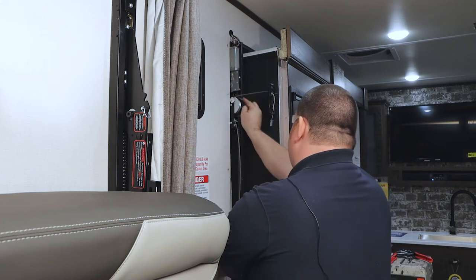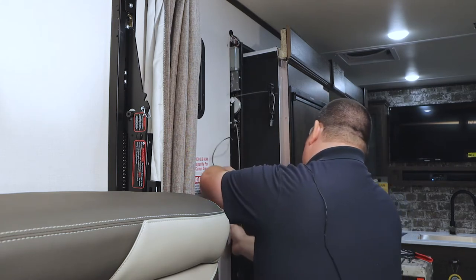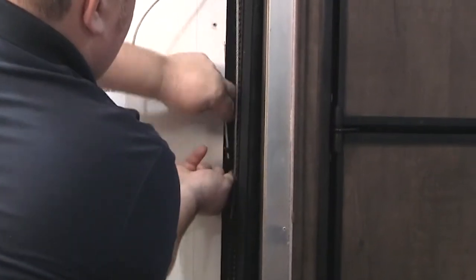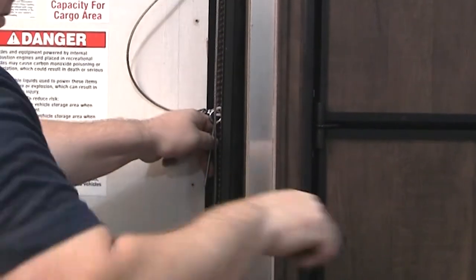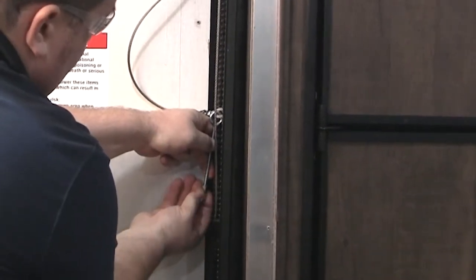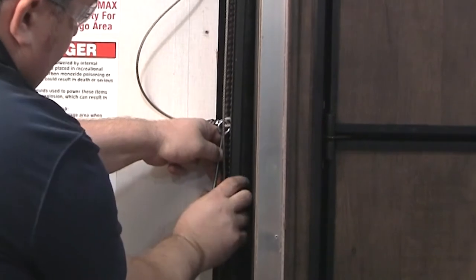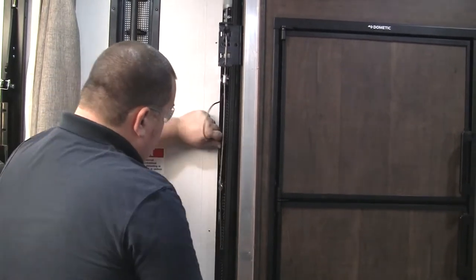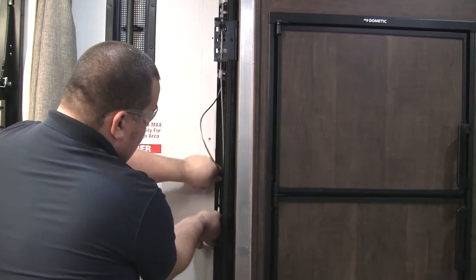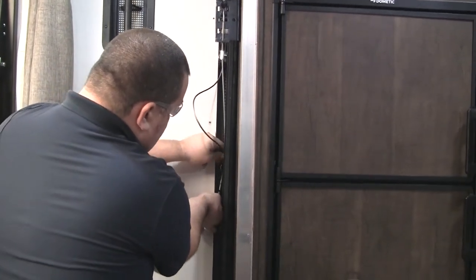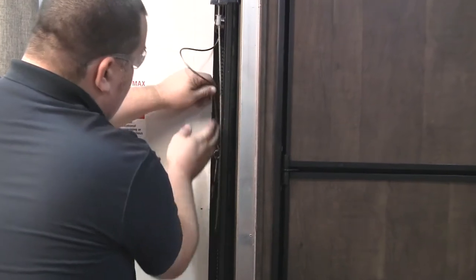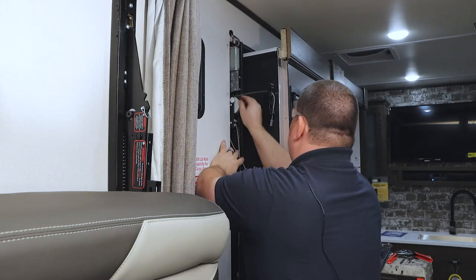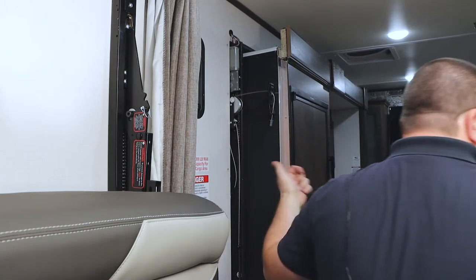Then we'll push some of this slack up and out so we can reconnect this eye bolt. Seat the nut back into the bracket and then we'll reconnect the cable outside again.